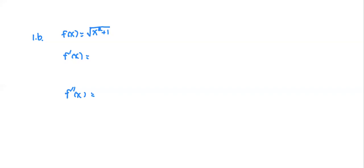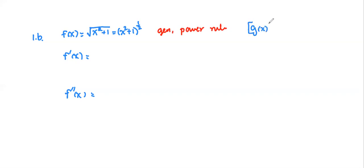For this problem, we have f(x) as the square root of x squared plus one. The goal is to find f prime. A student suggests the general power rule because x squared plus one can be written as a power of one half. So we rewrite the square root as the quantity x squared plus one raised to the power one half — this is g(x) raised to the power n.